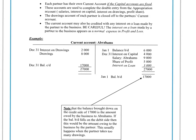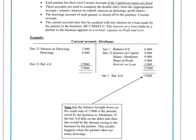The balance brought down always ends up on the credit side because it's like we owe this — like we would owe a creditor. We owe the partner Abrahams, in this case, $17,000 — the business owes him $17,000. So at the end of each year, you'll have a balance carried down and that will be taken to the beginning of next year to show the partner how much they're owed by the company.